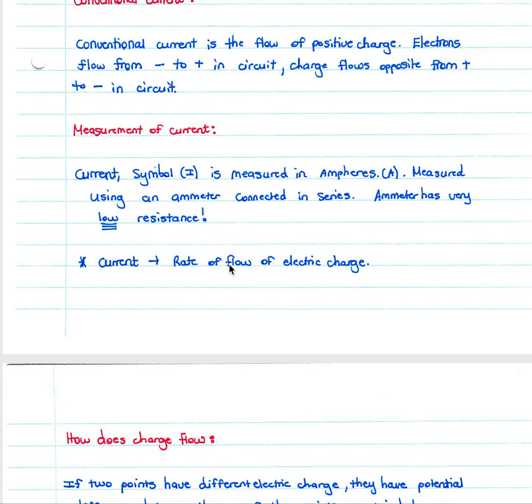Current has the symbol I and is measured in amperes (A). It's measured using an ammeter connected in series because an ammeter has very low resistance. Current is the rate of flow of electric charge. Increased current means an increased rate of flow of electric charge.